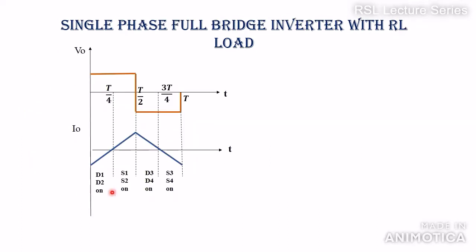Looking at the waveforms: during mode 1, the voltage is positive, and during mode 2, the voltage is negative. For the load current, when S1 and S2 are on, the current rises in the positive direction. At t = T/2 when S3 and S4 are turned on, it starts rising in the negative direction. At t = T when those switches are turned off, the current continues to flow through diodes D1 and D2. This cycle is repetitive in nature.